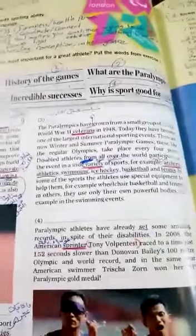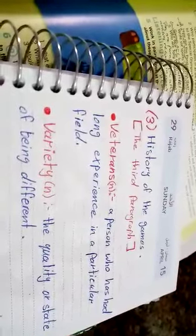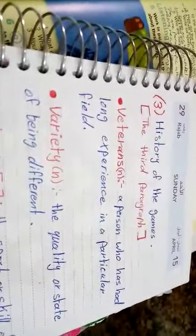Now, what is the heading of this paragraph? The heading of this paragraph is history of the games. Now, what about the strange words? Veterans, it's a noun. A person who has had long experience in a particular field.